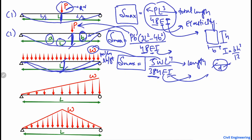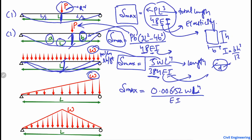The next case is a simply supported beam with a uniformly varying (triangular) load. The maximum deformation equals 0.00652 × WL⁴ divided by EI. W is the uniformly varying load in kilonewtons per meter or pounds per foot, L is the total length of the beam, E is the modulus of elasticity, and I is the moment of inertia. Substituting the values gives the maximum deformation in the beam.